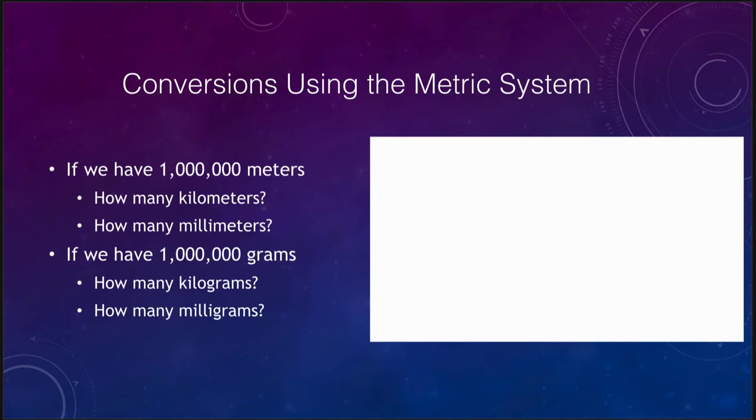Let's do this now for grams instead of meters. If we have 1 million grams of something, and we want to convert that to kilograms, well, one kilogram equals 1000 grams.